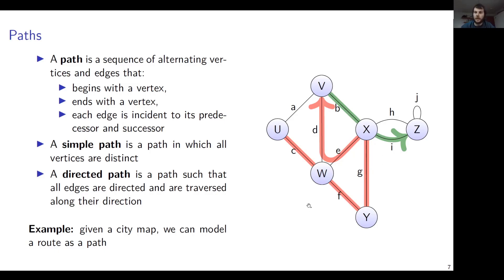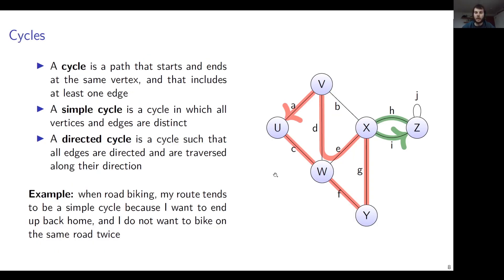In directed graphs we have directed paths, where all edges are traversed in their direction. Then we have cycles — cycles are paths where the start vertex and end vertex are the same. Here we see a path with start and end vertex U, so this path is a cycle. Similarly, a cycle is simple if it doesn't go through the same vertex twice. The red cycle is not simple, and the green cycle is simple. A directed cycle traverses edges along their direction.